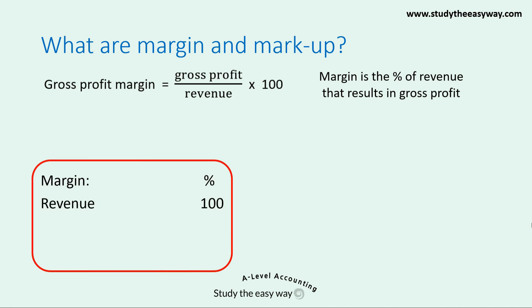We can state gross profit margin in the following way. Our start point is revenue, and we deem this to be 100. If the gross profit margin is 15, then of the 100 that represents revenue, 15 is gross profit and the rest is cost of sales. So cost of sales is revenue of 100 minus gross profit margin of 15, giving a cost of sales of 85.